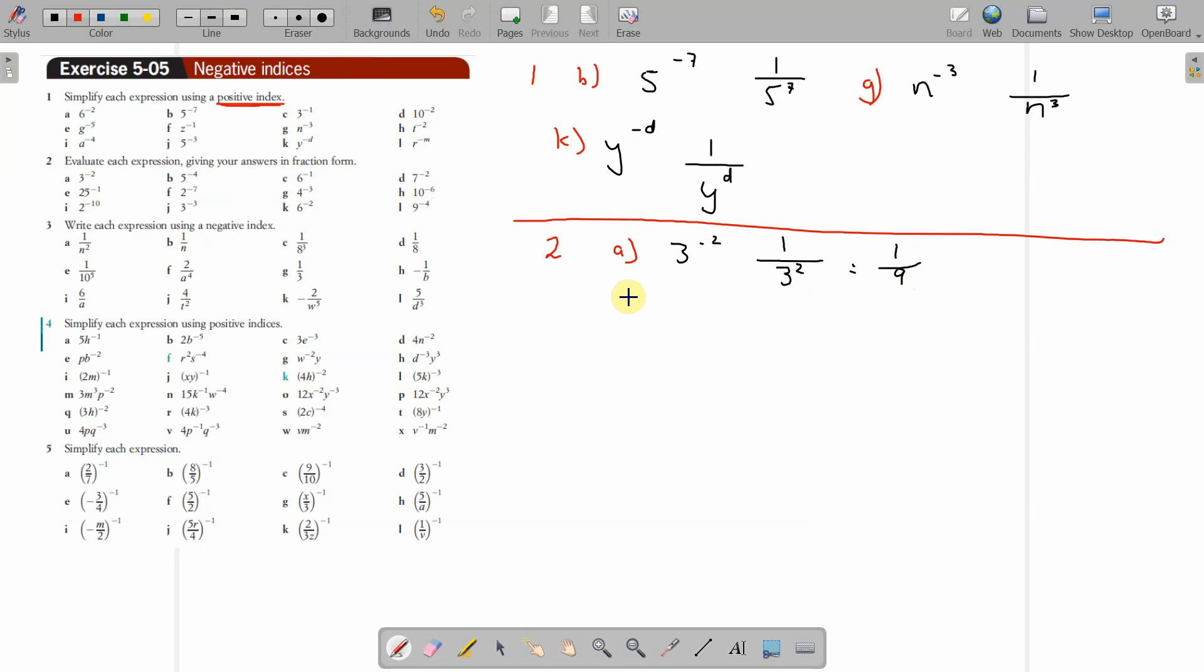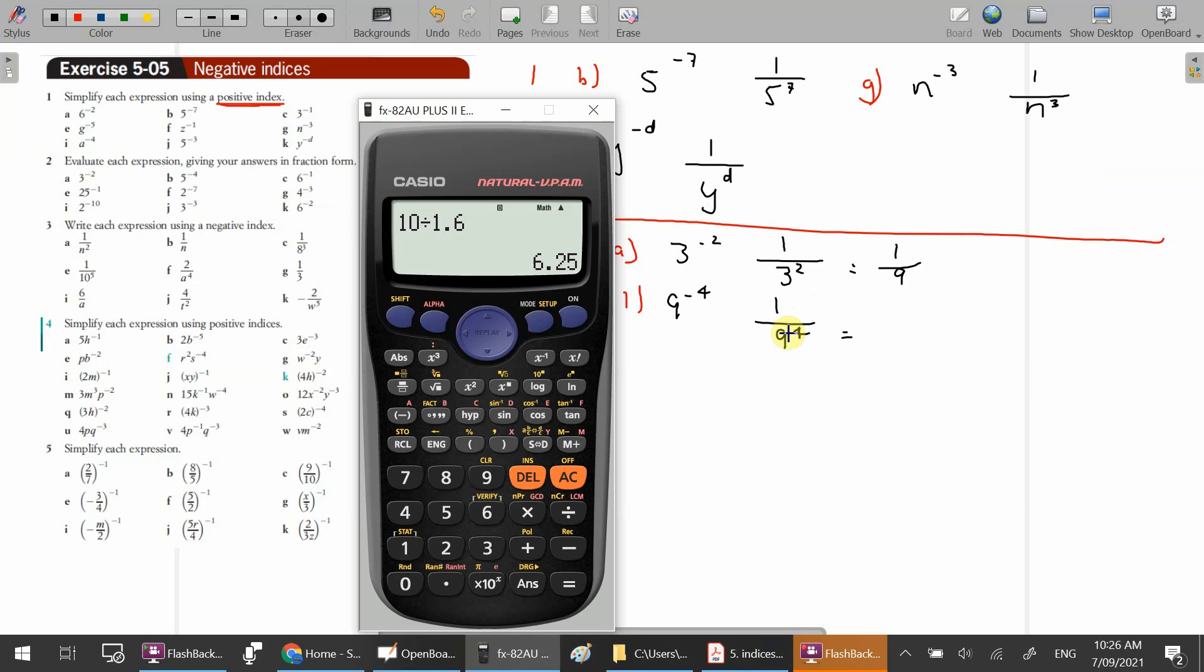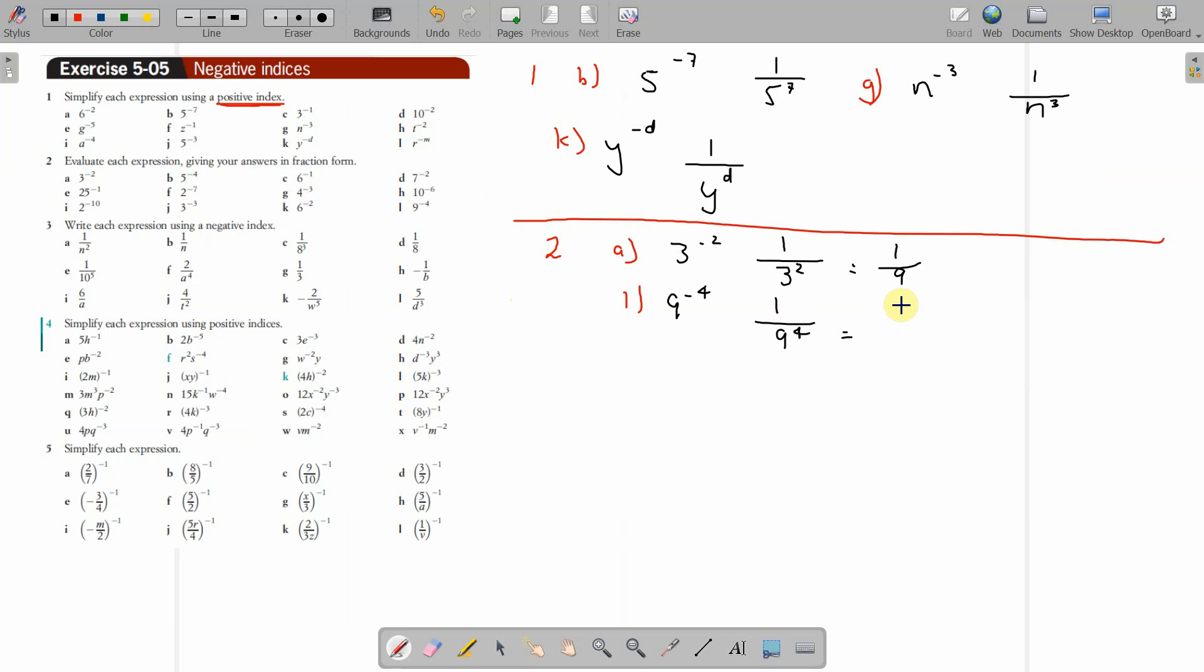Let's go part l, 2l. 9 to the negative 4 in their fraction form. Yep, 1 over 9 to the power of 4, and they'll want it calculated. 9 to the power of 4 equals 6561, so 1 over 6561.